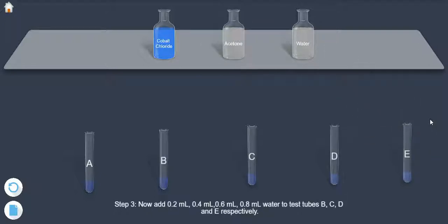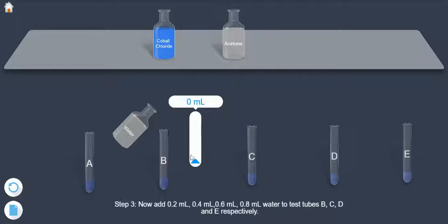Now add 0.2 ml, 0.4 ml, 0.6 ml, 0.8 ml to test tubes B, C, D and E respectively.